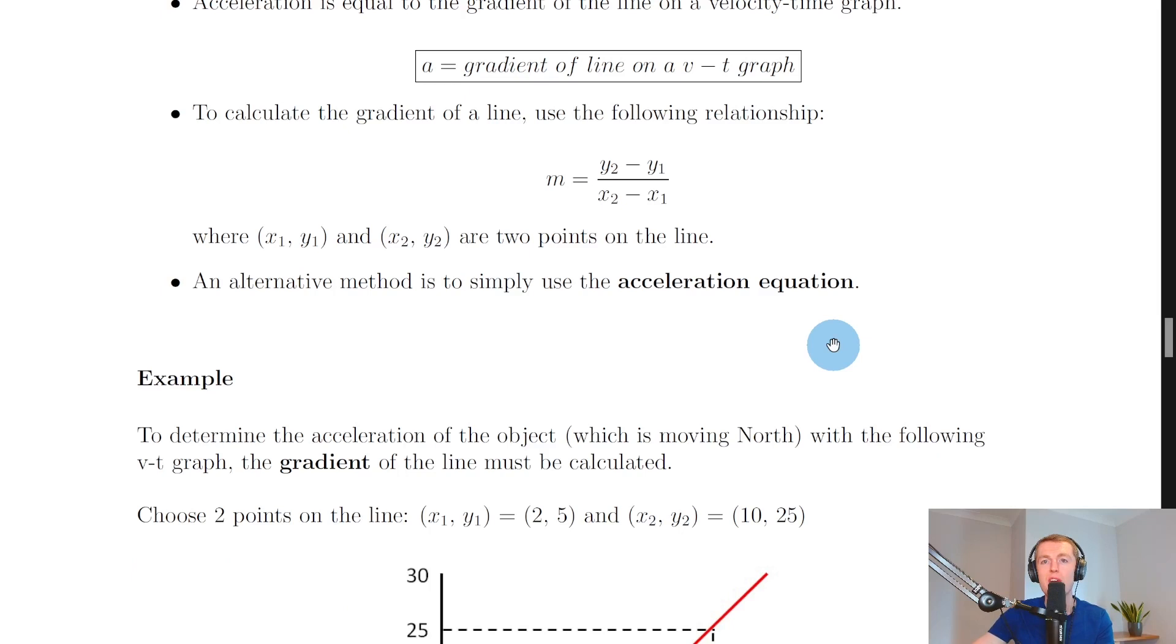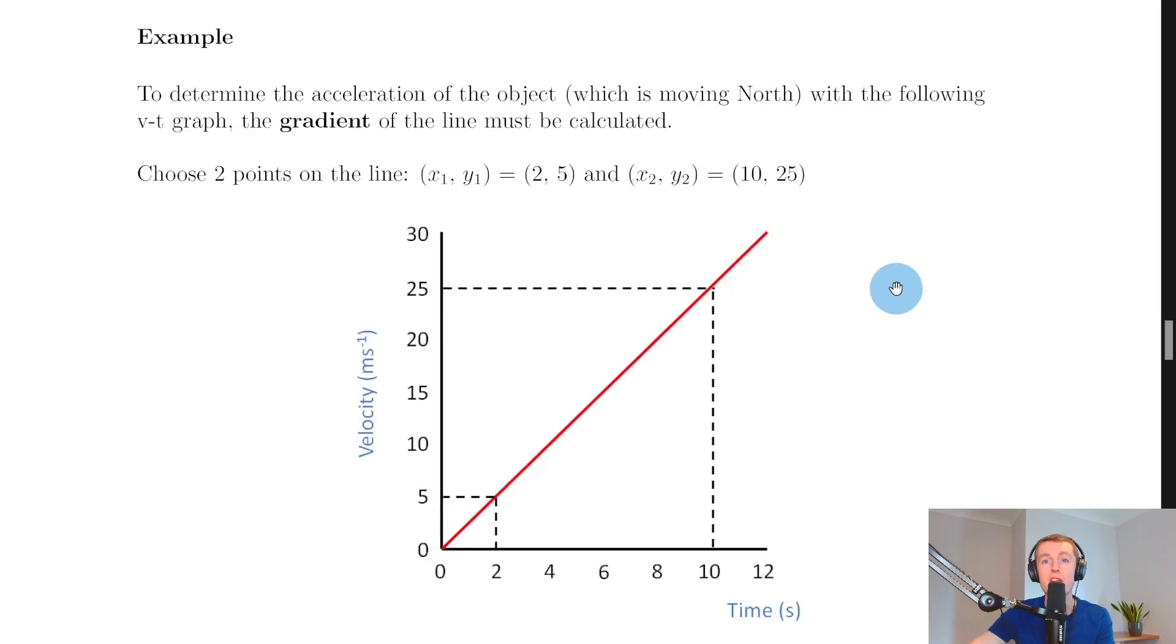However, an alternative method, and one that a lot of pupils tend to prefer using, is to simply use the acceleration equation. So you can take values of initial velocity u, final velocity v, and total time t from the velocity-time graph and plug it straight into the acceleration equation to get the same answer as the gradient method would give you.